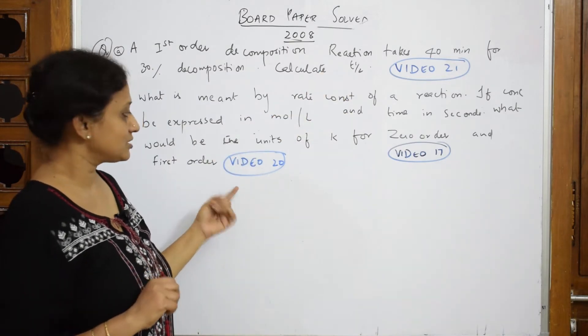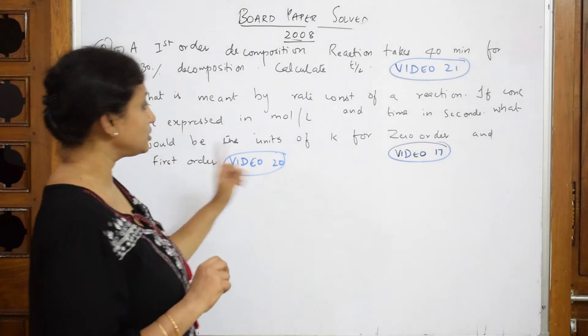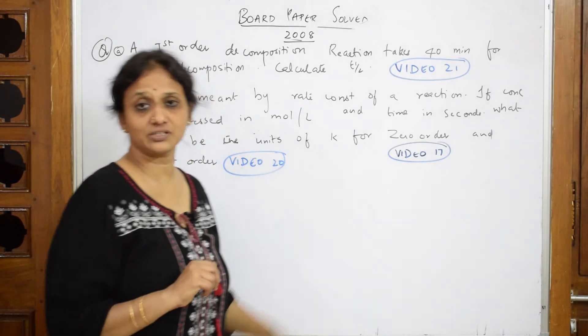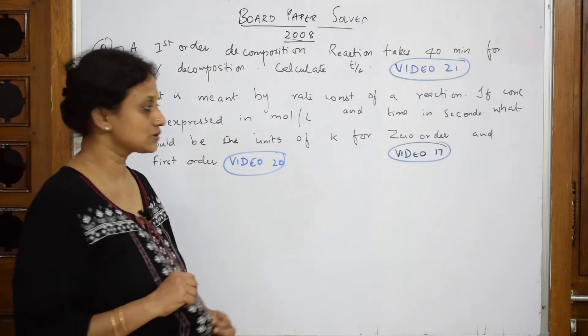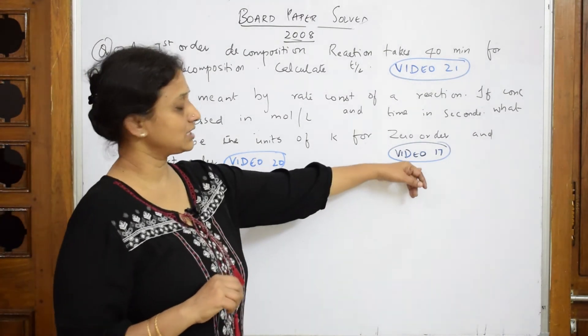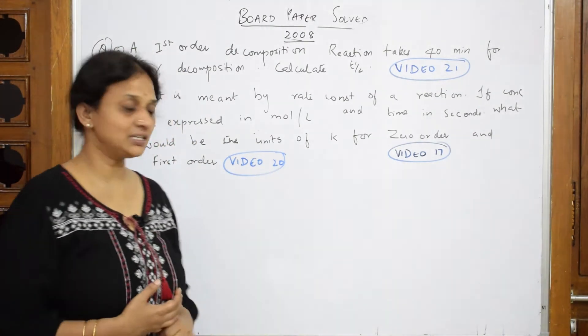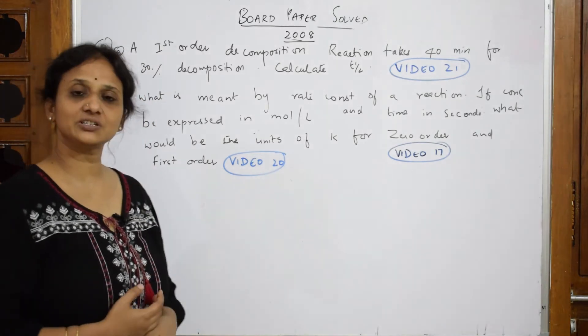For the second question, they have asked you to show the units for the zero order and first order rate constants. A video is made on this particular question also. For zero order, I have mentioned it as video 17, and for first order I mentioned video 20.